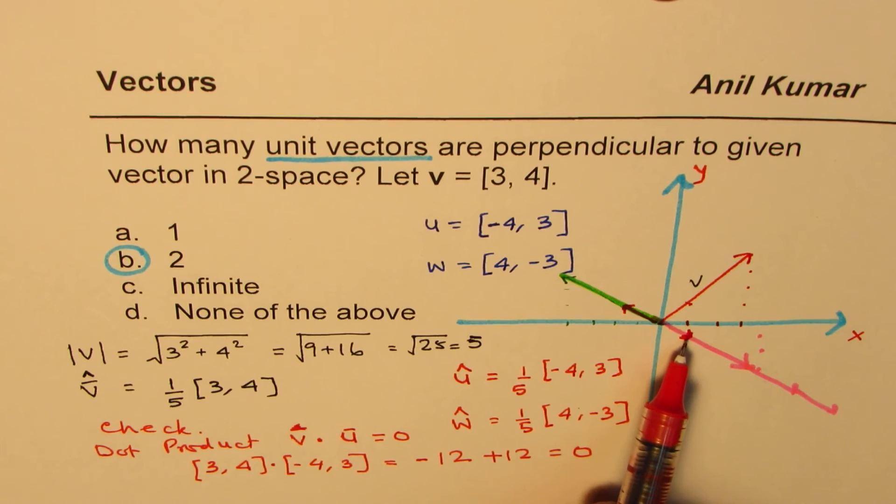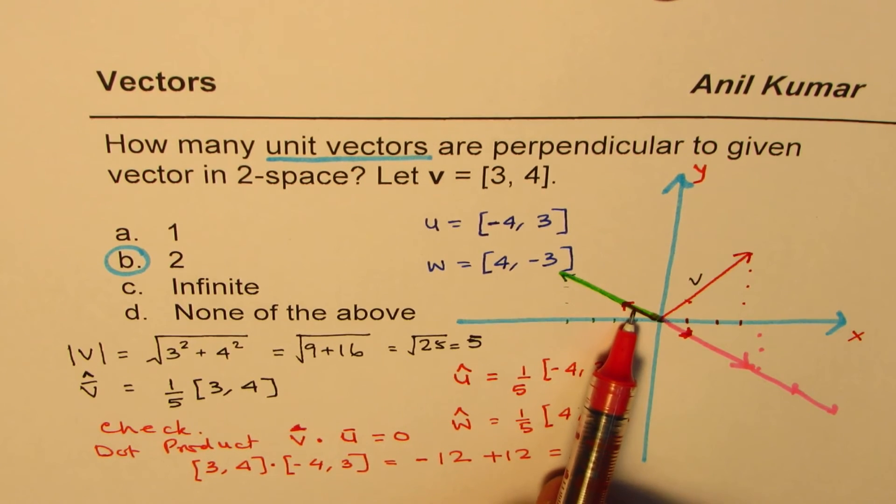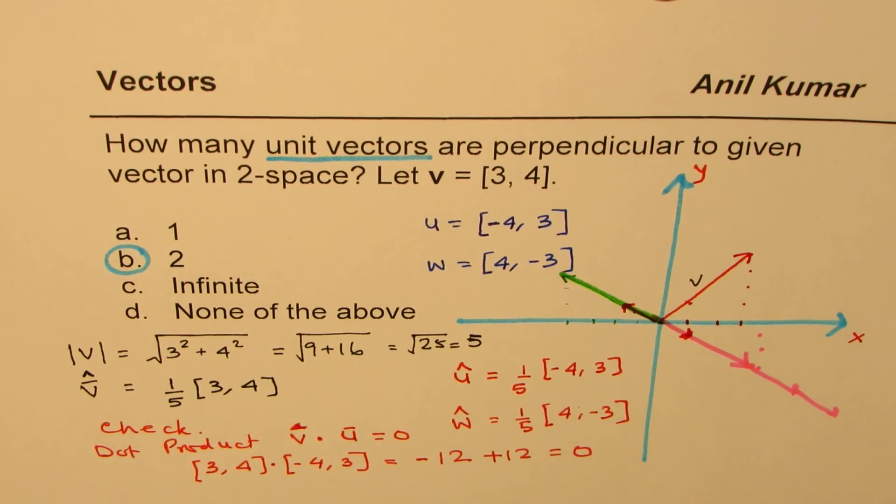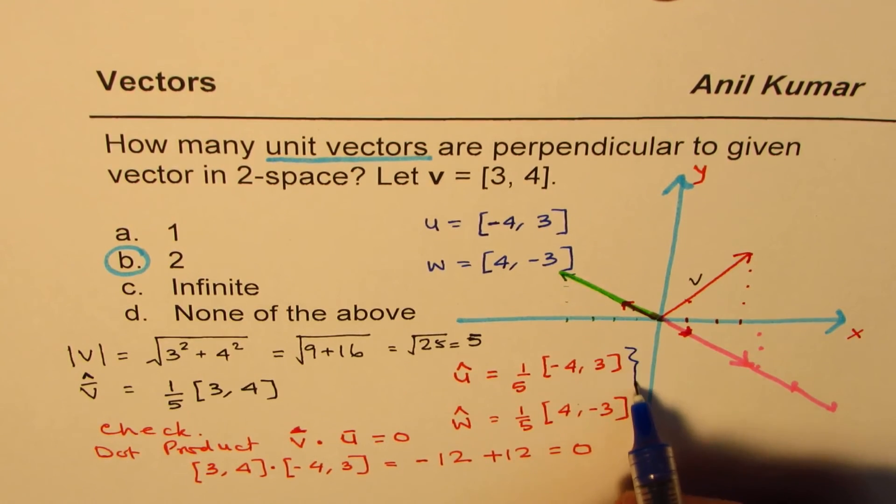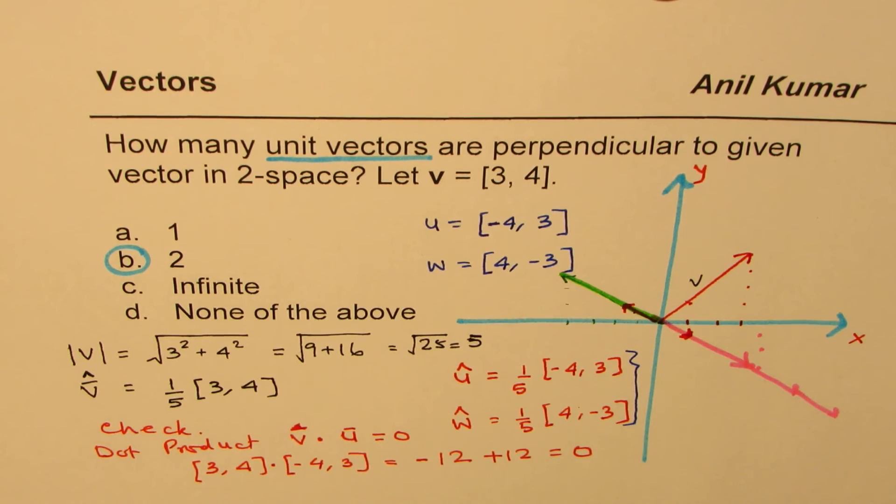These vectors are perpendicular. If I divide their magnitude by the magnitude of the vector, I get the unit vector. These are the two unit vectors which are perpendicular to the given vector.